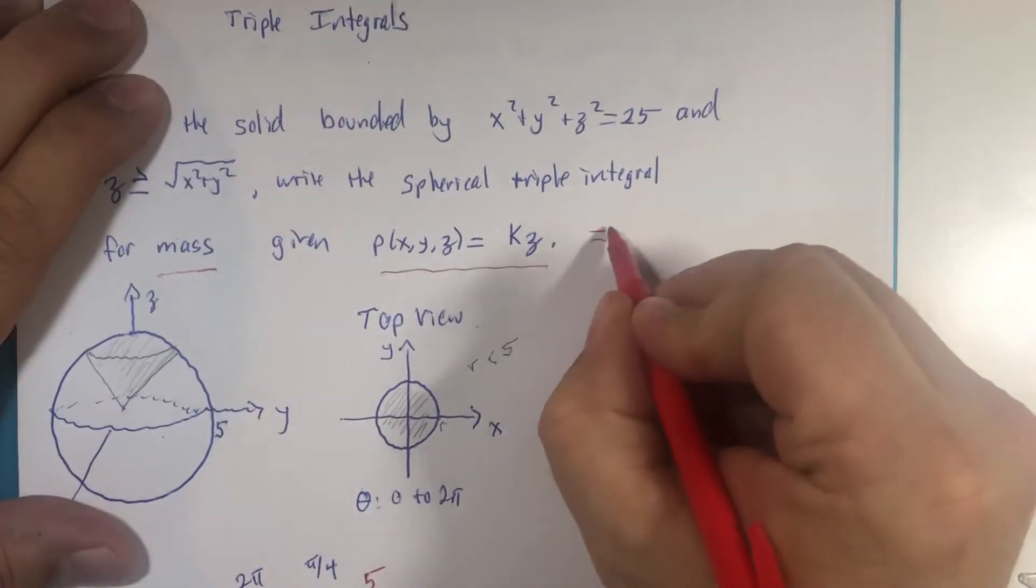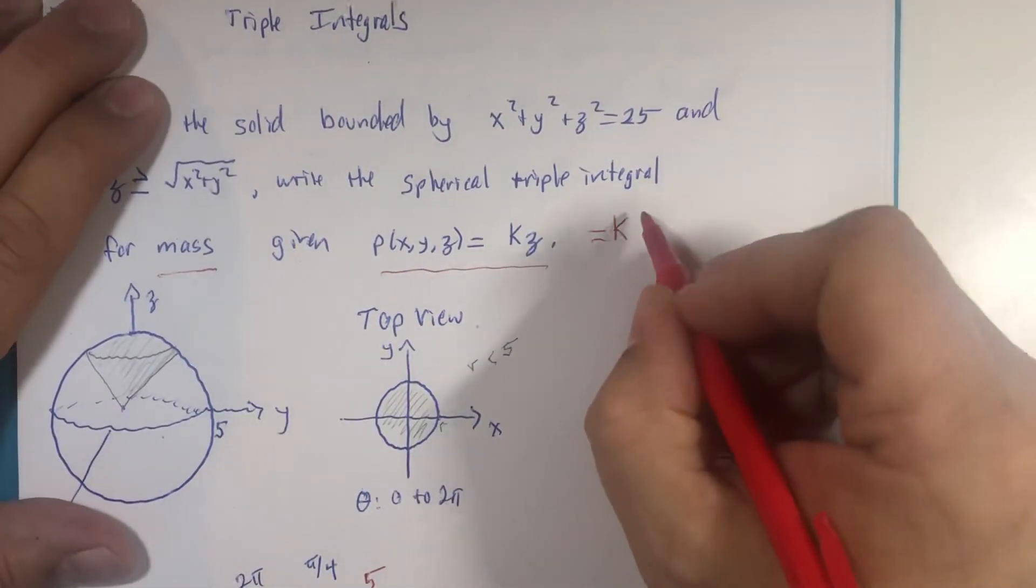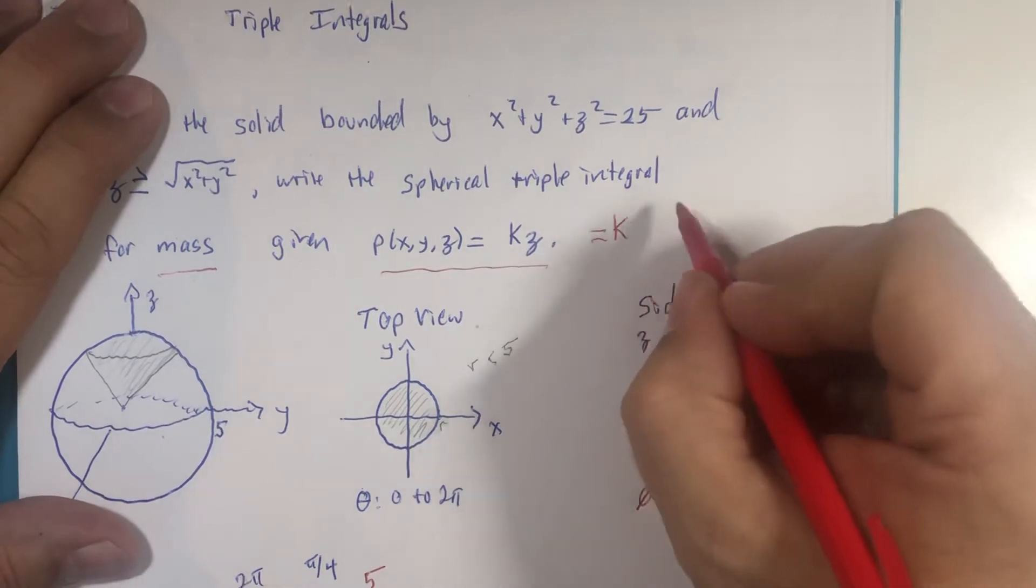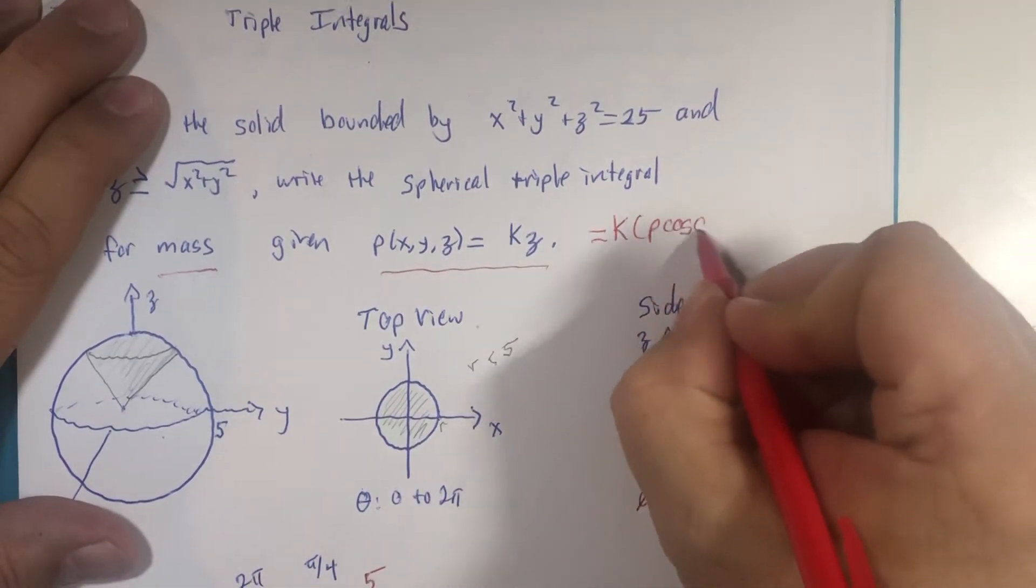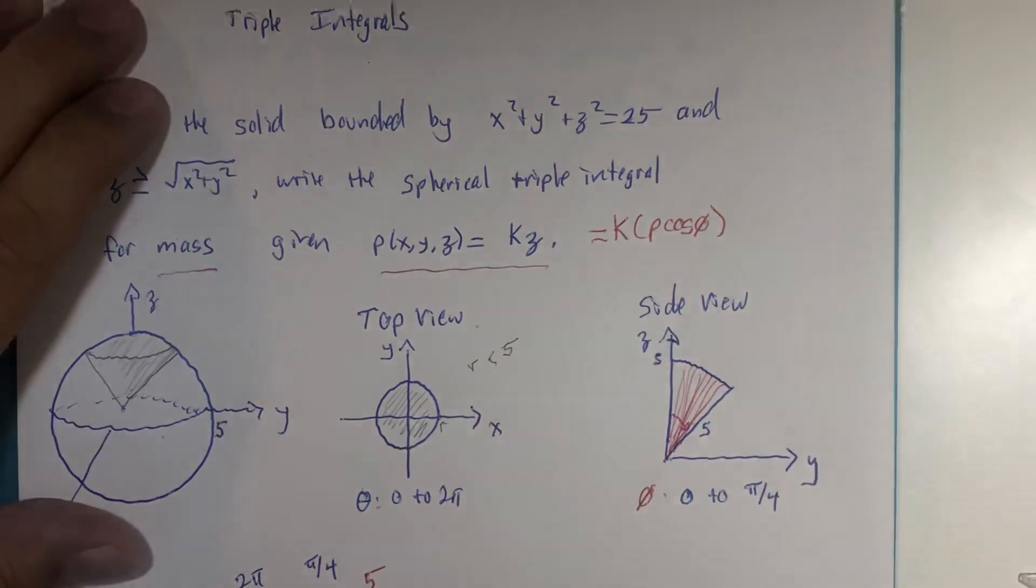Now z is equivalent to ρ cos(φ) in our spherical conversions. A list of formulas you should keep close by if not going to memorize them.